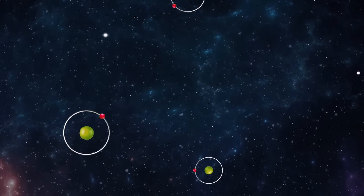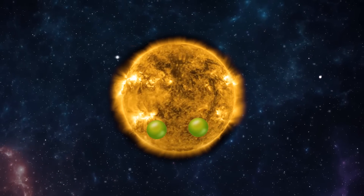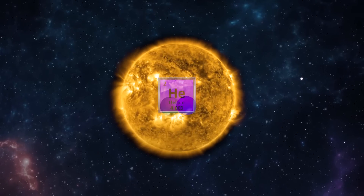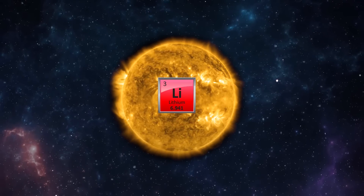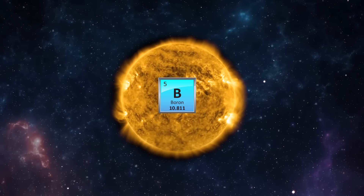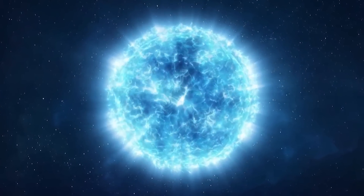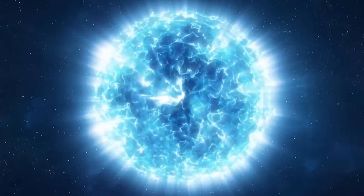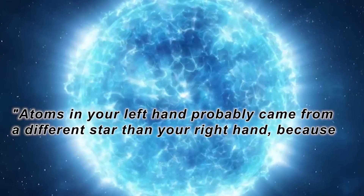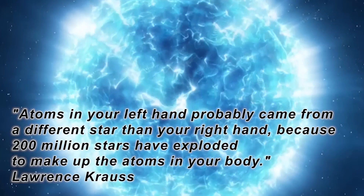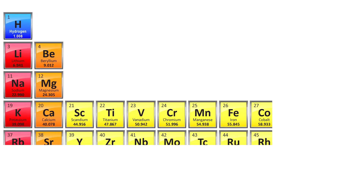But how are the elements formed in the first place? It's stars. Stars are initially balls of hydrogen that under their massive gravity exert enormous pressure that fuses hydrogen into helium. Once all the helium is used up, about 10 million years, the star combines these to make heavier elements. Our sun can produce lithium, beryllium, and boron by fusing helium, but bigger stars are needed to produce all the other elements. The elements were formed by nuclear processes, not chemical ones. Atoms in your left hand probably came from a different star than your right hand, because 200 million stars have exploded to make up the atoms in your body. Back on Earth, with the exception of radioactive elements, the atoms in the periodic table do not change.